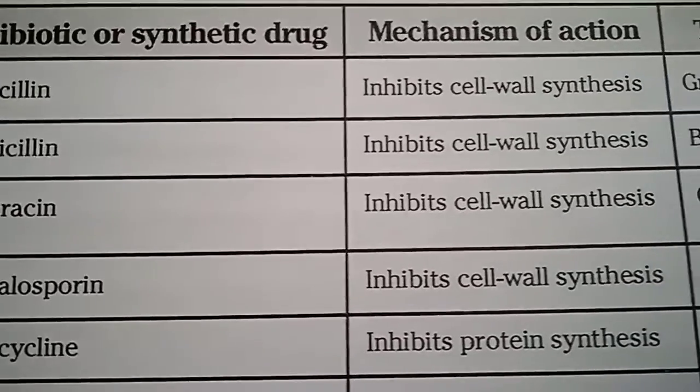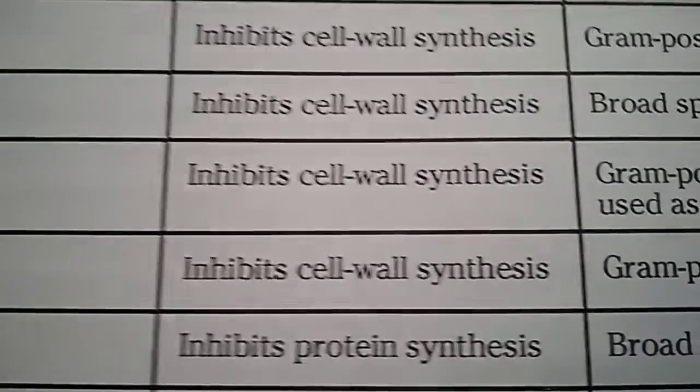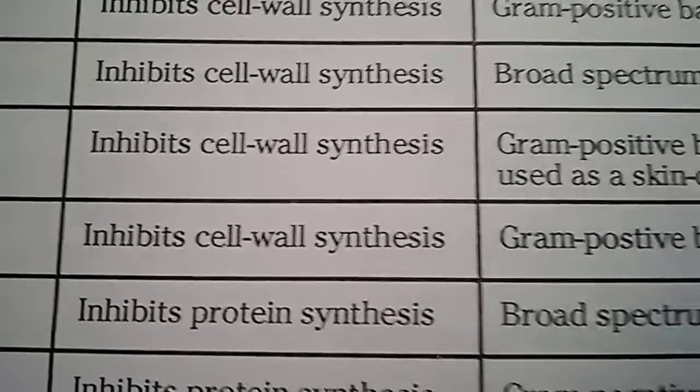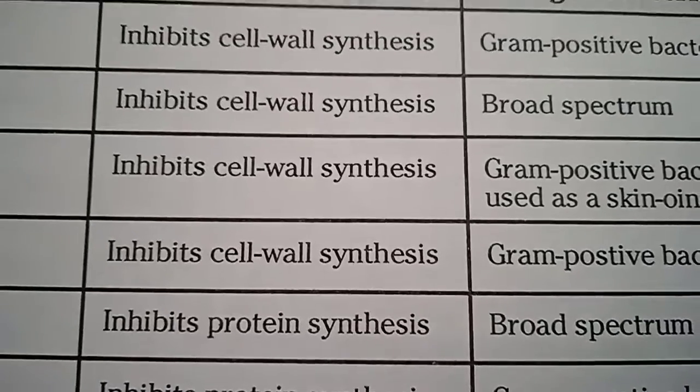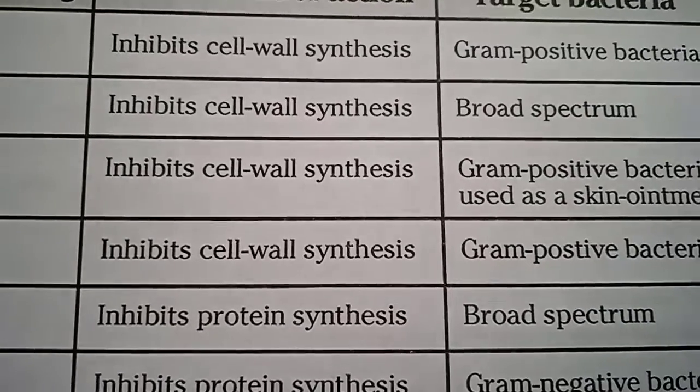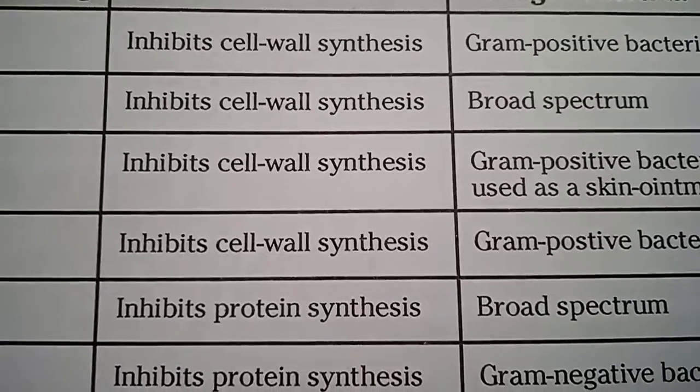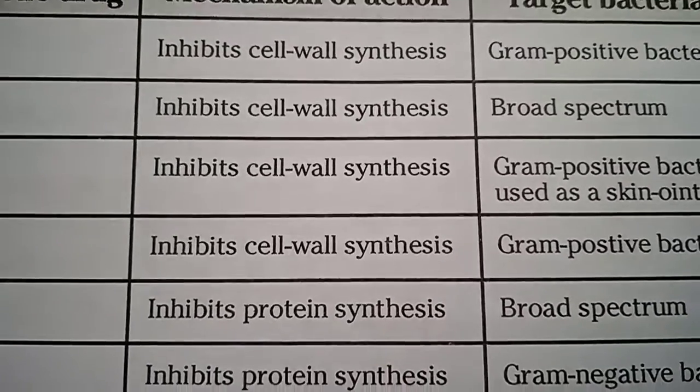Ampicillin: inhibit cell wall synthesis. Broad spectrum — that means effective against both gram positive and gram negative bacteria.